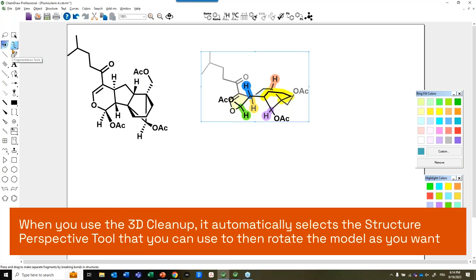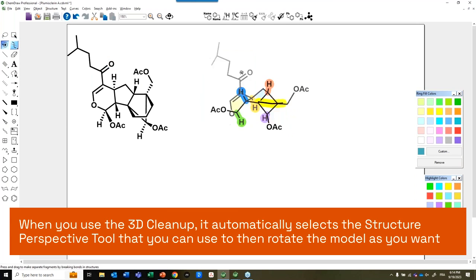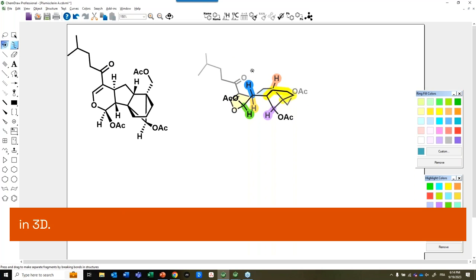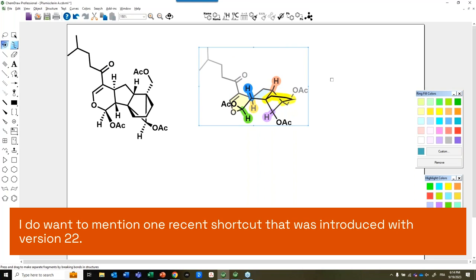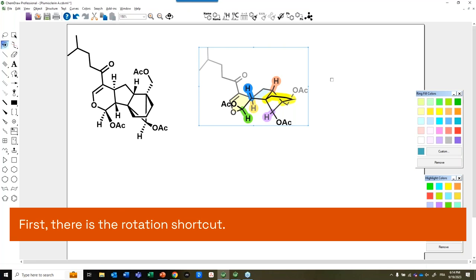When you use the 3D cleanup, it automatically selects the Structure Perspective Tool that you can use to then rotate the model as you want in 3D. I do want to mention one recent shortcut that was introduced with version 22. First, there's the rotation shortcut.